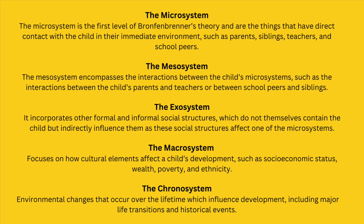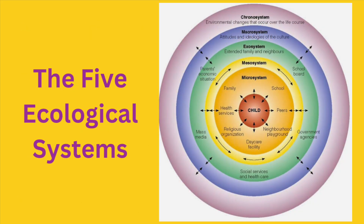Next is the exosystem, which is a setting that links a context wherein the person does not have any active role to a context wherein they are actively participating. For example, suppose there is a child who is more attached to his father than his mother. If the father goes away for work for several months, there may be a conflict between the mother and the child's social relationship, or this event may actually result in a greater bond between the mother and the child. This is how the exosystem comes into play.